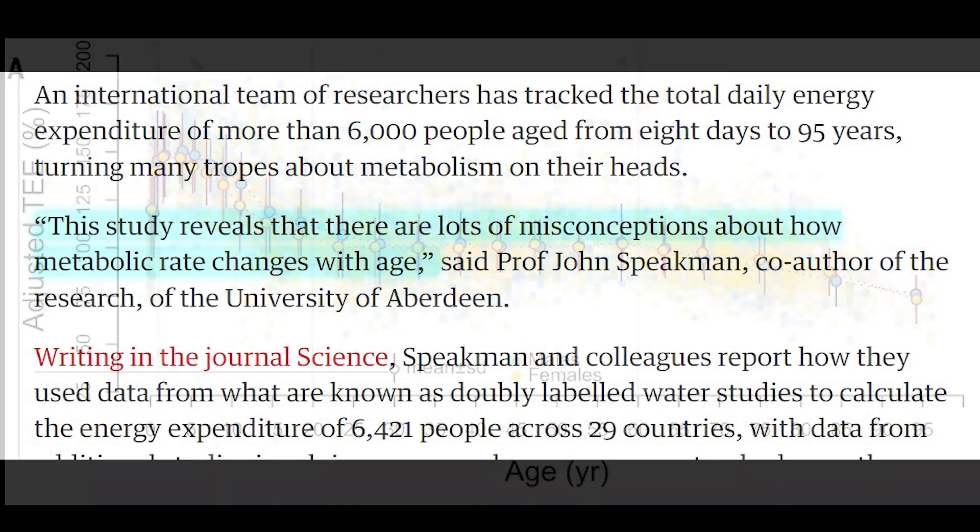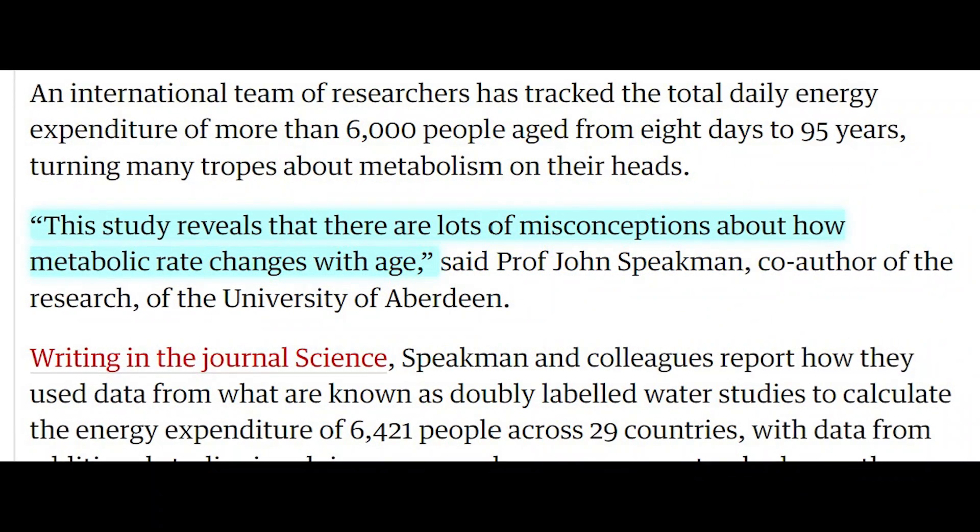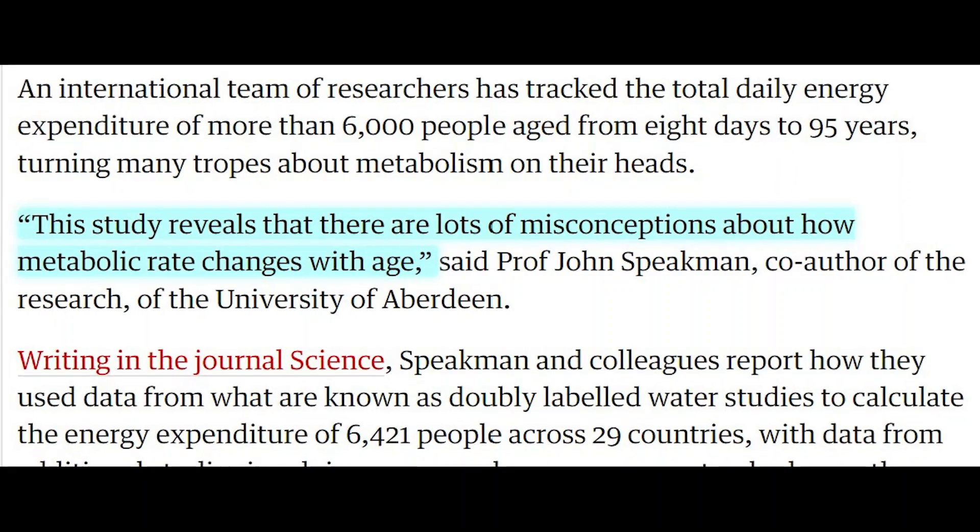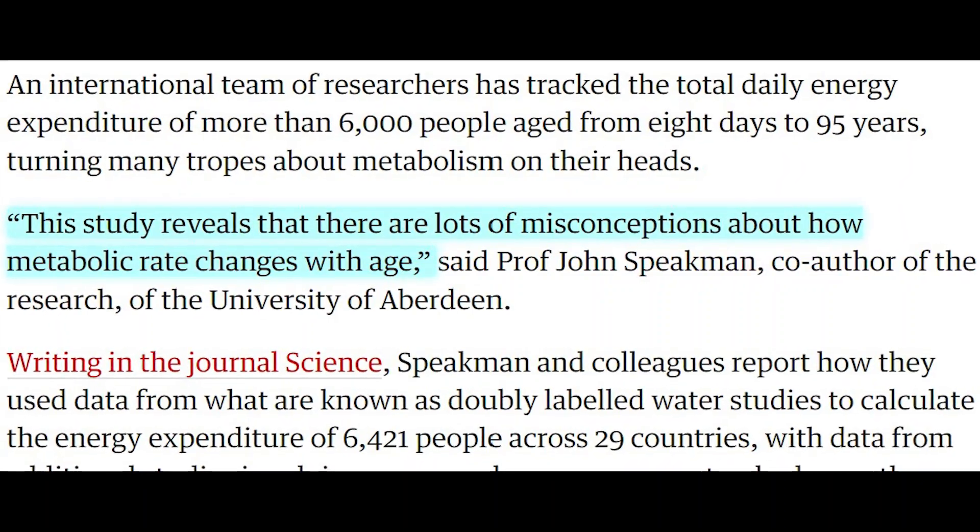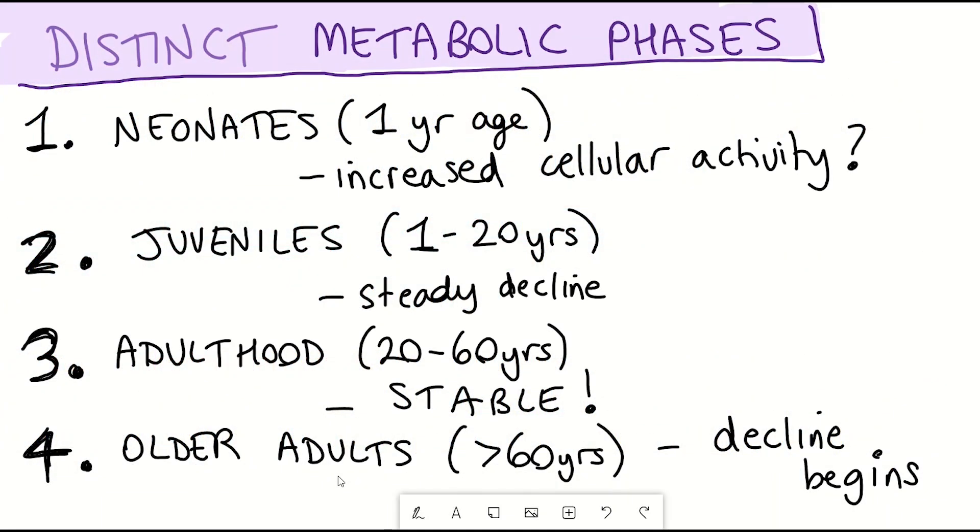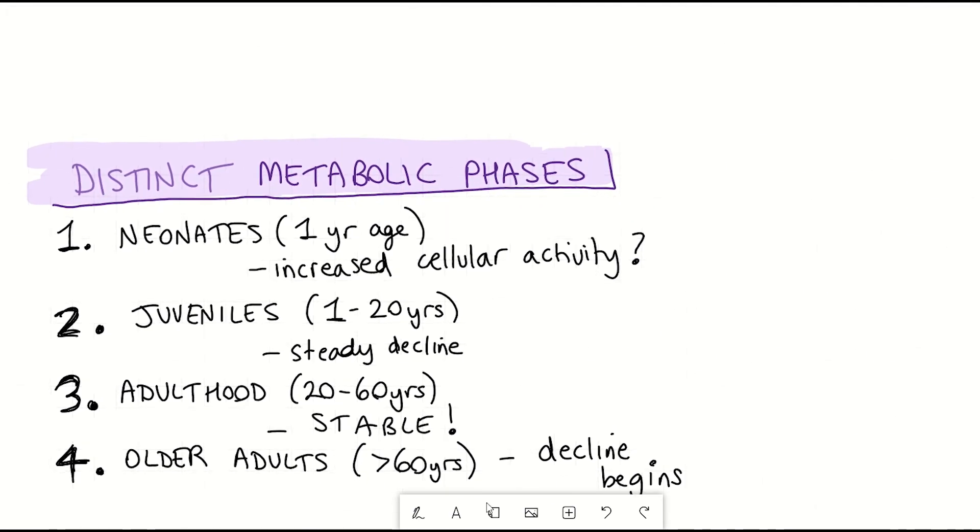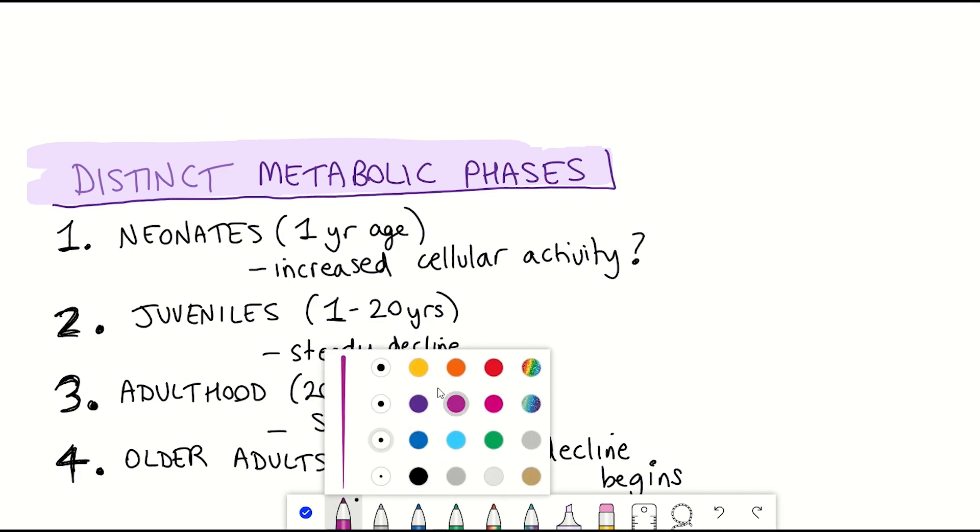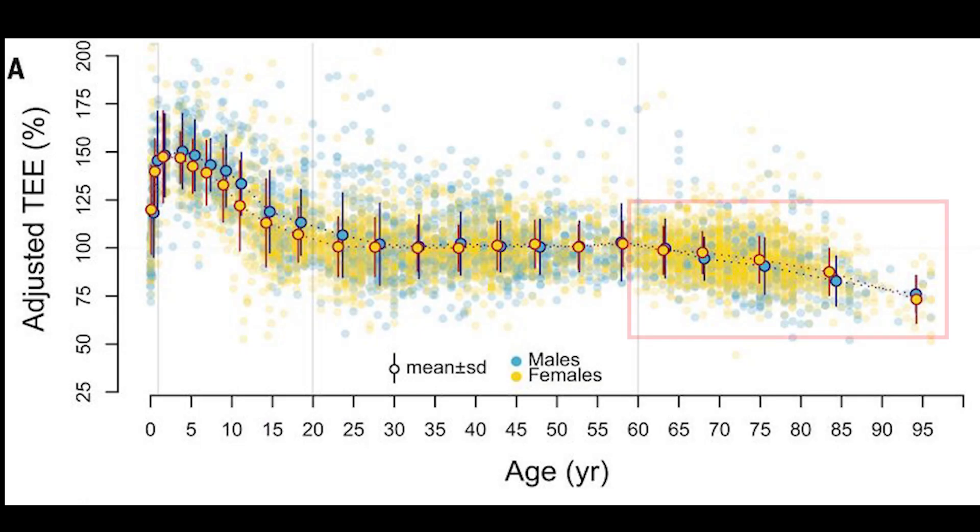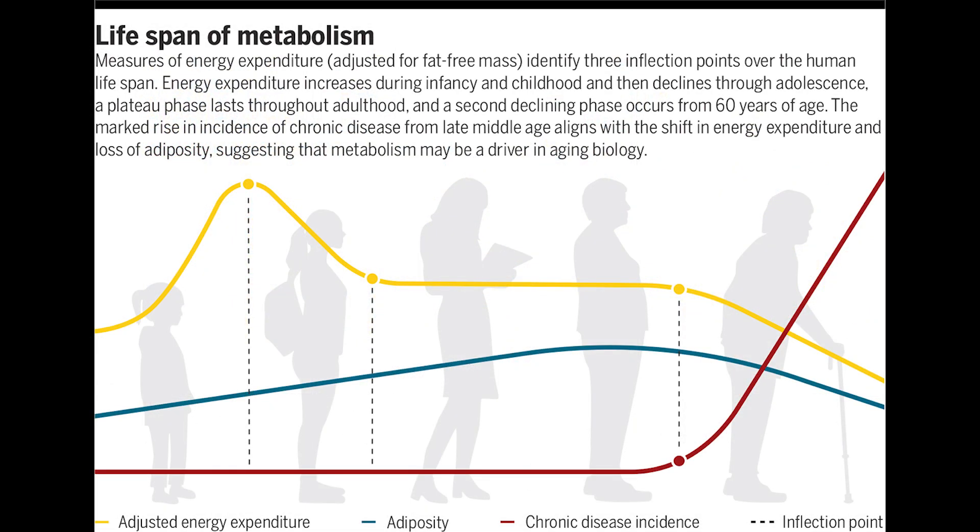And so what we can see from this data set is that it reveals that there are lots of misconceptions about how metabolic rate changes with age. And so what does all of this data mean? And why does there seem to be these apparent transition points? Well, let's start with the interesting bit, which is the decline at the end at age 60. And well, one idea is that this energy expenditure transition point coincides with the incidence of many different diseases, and therefore it may be reflecting changes in tissue-specific metabolism.